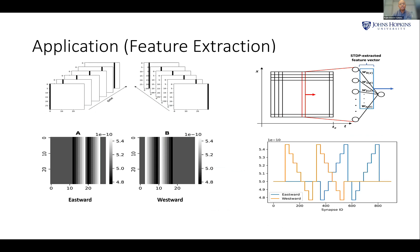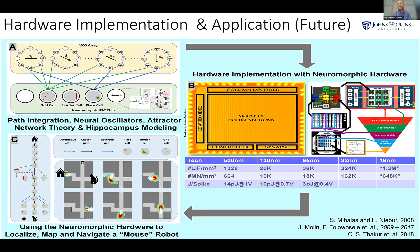The system can predict the direction of motion of movements. With a line moving left and right, the weight distribution shows it prefers motion in a certain direction and suppresses motion in the opposite direction, as expected during the learning process — so it learns the direction of travel of the line.